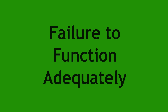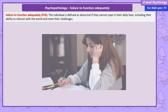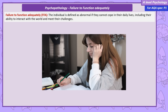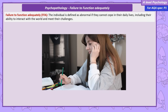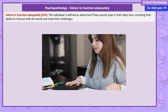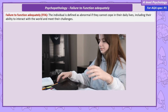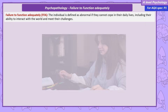The previous definition compares an individual against the wider population. This definition, failure to function adequately, considers the individual's ability to cope in their daily lives, including their ability to interact with the world around them and meet the challenges they encounter. Some individuals may struggle to meet those requirements.